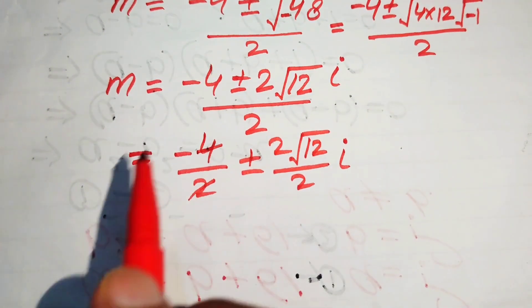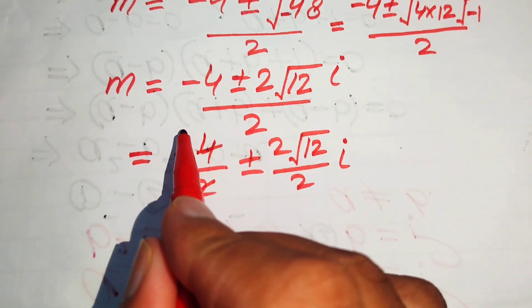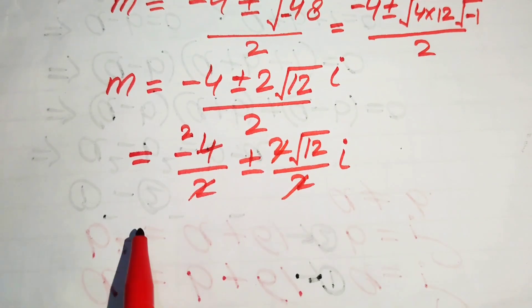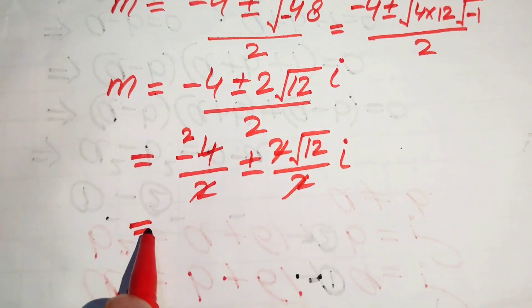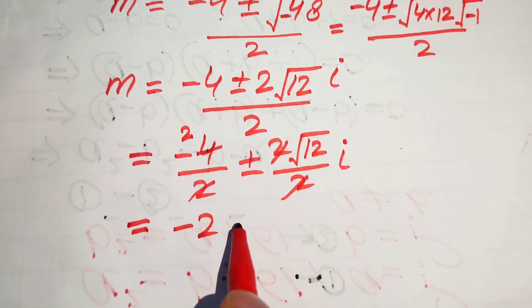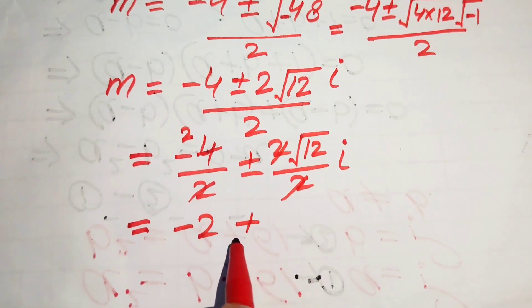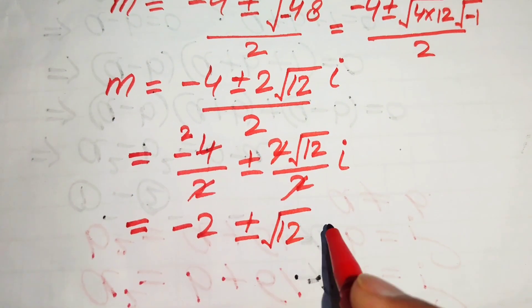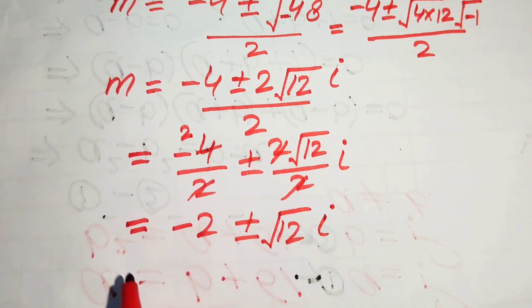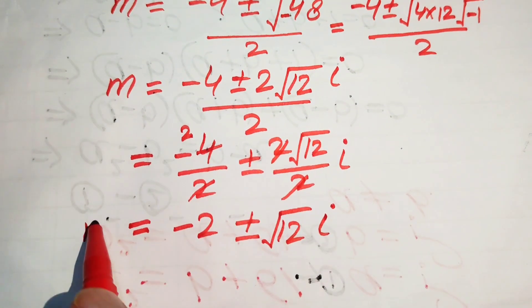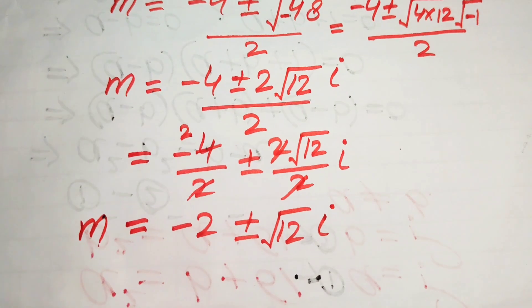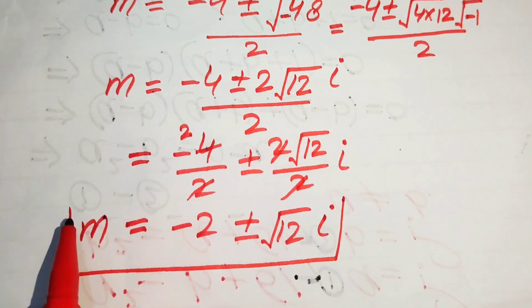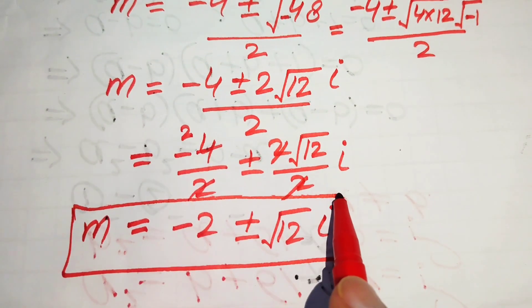The 2 in the numerator and denominator cancel, and negative 4 over 2 gives negative 2. So we get m equals negative 2 plus or minus square root of 12 times iota. These are the two complex roots of the equation.